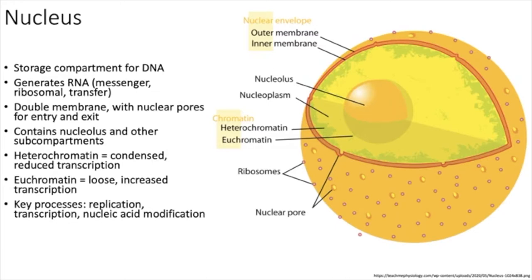The nucleus has a double phospholipid bilayer with nuclear pores that allow things to come in and out. The nucleolus is the most common sub-compartment — that's where we make ribosomal RNA as opposed to messenger RNA. Chromatin is your DNA plus the proteins that keep it organized, such as histones. If DNA is condensed really tightly, it's hard for RNA polymerases to access it for transcription.